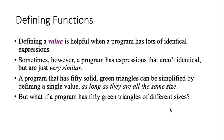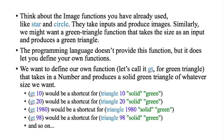So defining a value, which is what we did with the define word, is helpful when a program has lots of identical expressions. Sometimes, however, a program has expressions that aren't identical, they're just very similar. A program that has 50 solid green triangles can be simplified by defining a single value as long as they're all the same size. But what if a program has 50 green triangles that are different sizes? Think about the image functions we've already used, like star and circle. They take inputs and produce images.